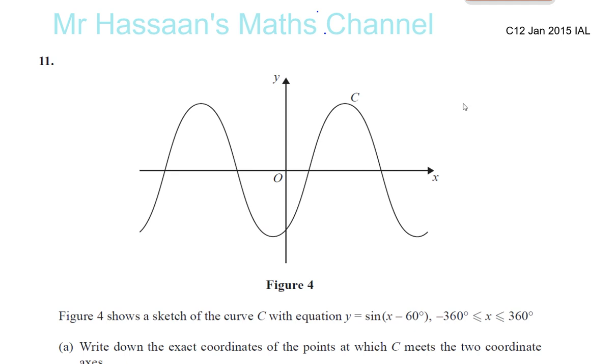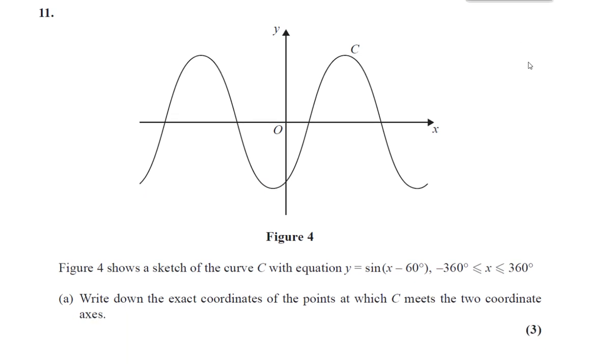Welcome back. Now we're going to do question number 11 from C12, January 2015, IAL. We have here a curve, like a sine curve, something related to the sine curve. Figure 4 shows a sketch of the curve C with equation y equals sine x minus 60, and x between minus 360 degrees and 360 degrees. Write down the exact coordinates of the points at which C meets the two coordinate axes.